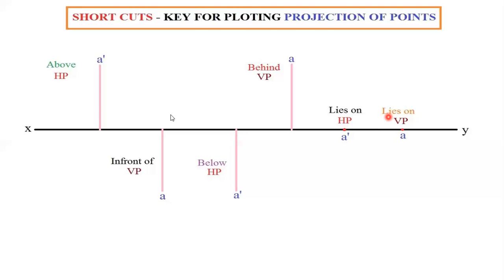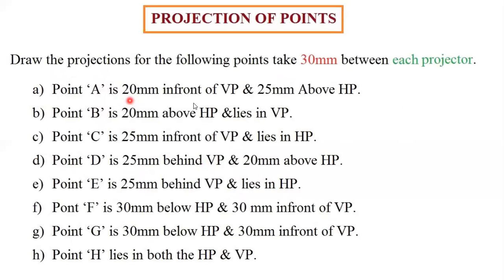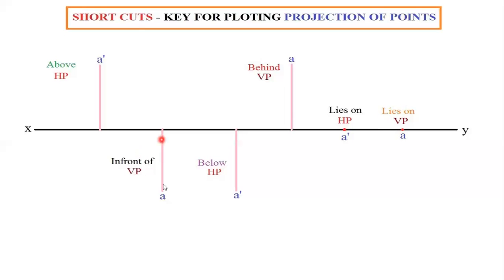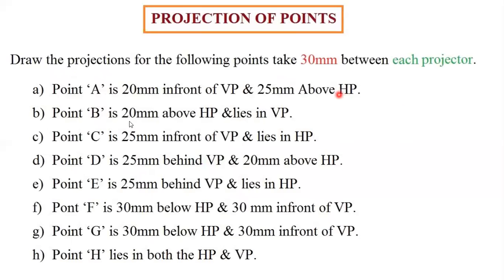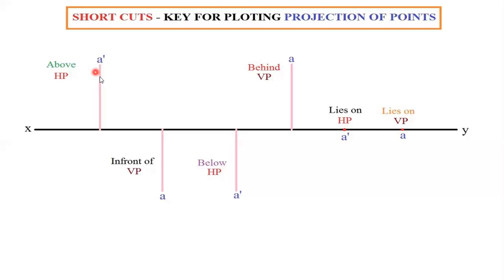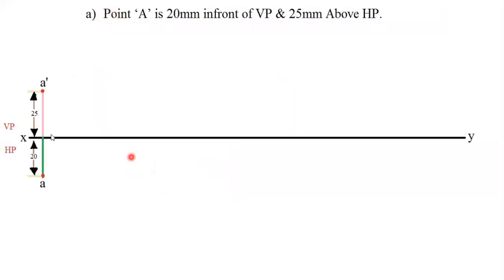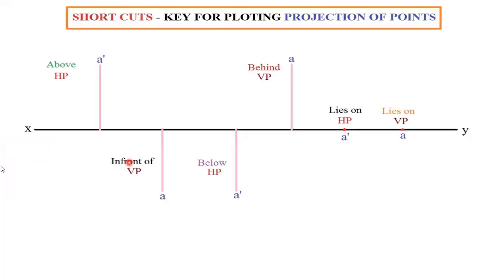The first question: point A is 20 mm in front of VP. If it's in front of VP, it has to be lying below the XY line. And 25 mm above HP — so above HP means A dash should come above and A should come below. The distance is clearly given, so just mark A dash 25 mm above the XY line and mark A 20 mm below the XY line.